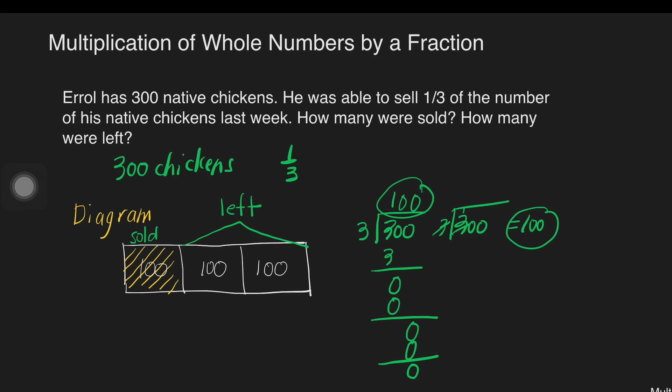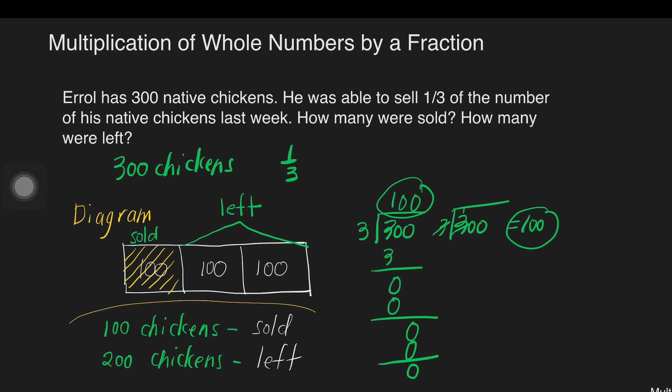We can already answer the question. How many were sold? It means Errol was able to sell 100 chickens last week. And then what's left? 100 plus 100, that's 200 chickens. This is the number of chickens were left. So these are our final answers.